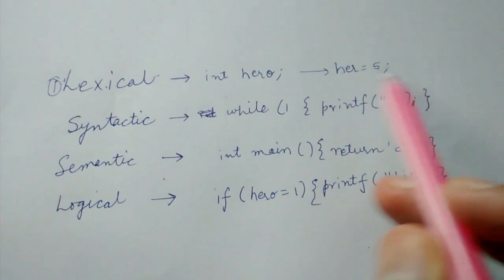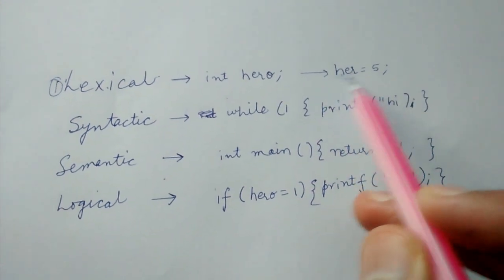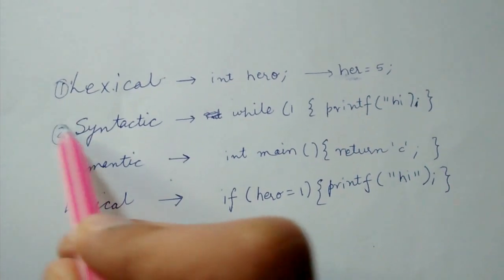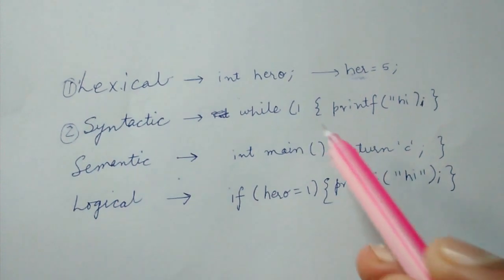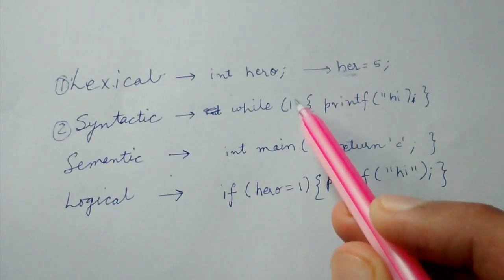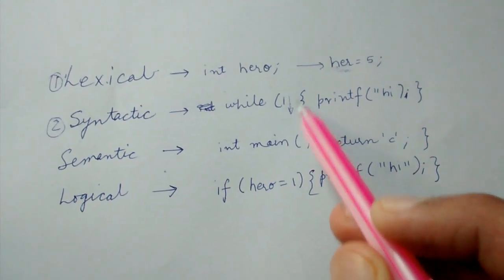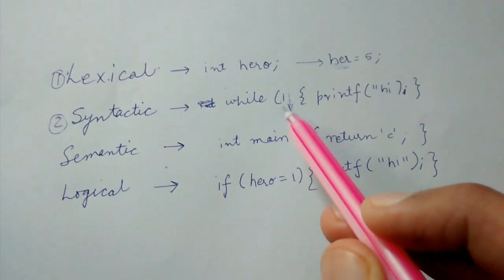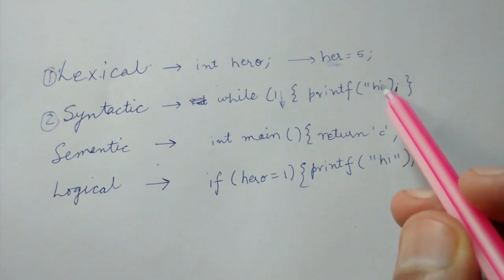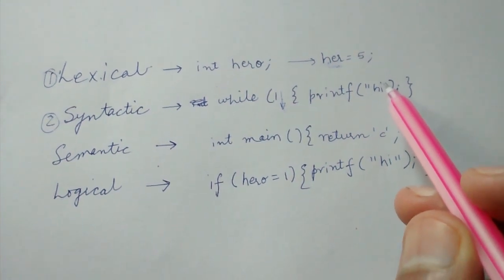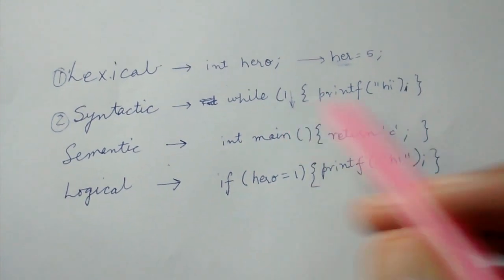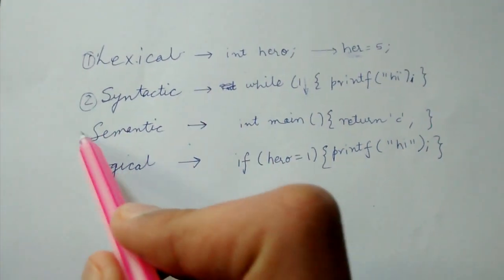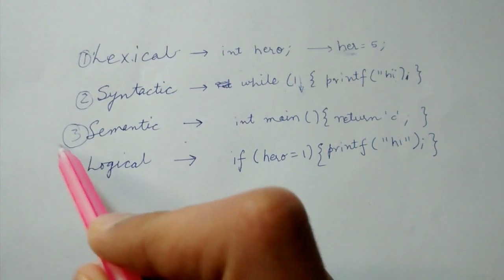We should write hero is equal to 5, and we have made a spelling mistake here. There are syntactic errors where we can see the closing bracket is absent, and here the closing double quotes are absent. So these kind of errors are called syntactic errors. Third one is semantic errors.